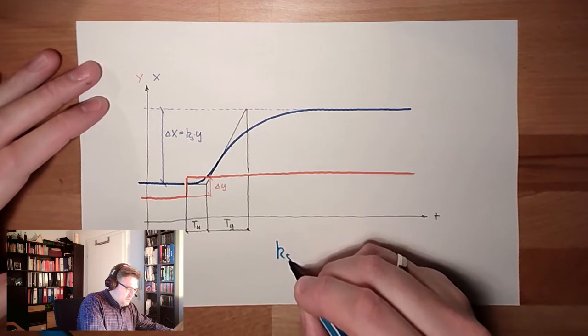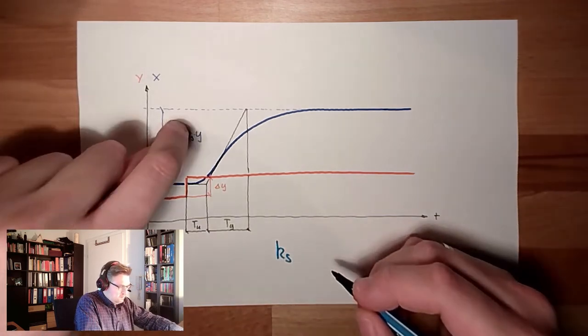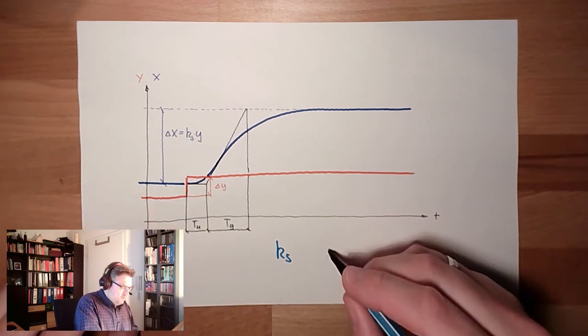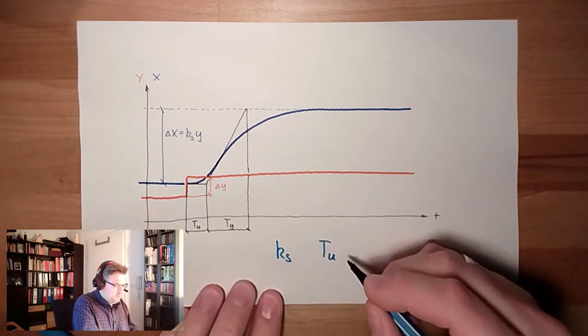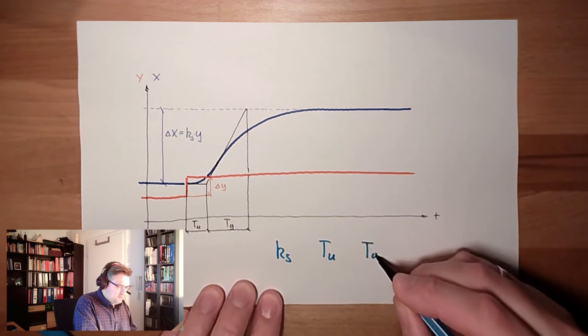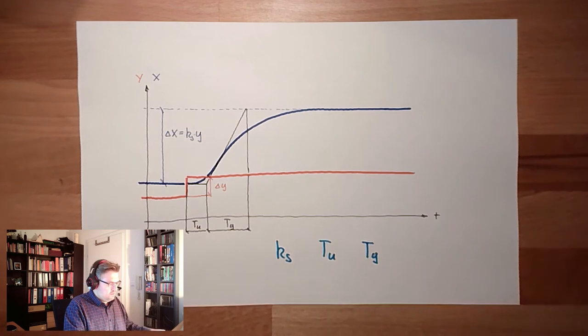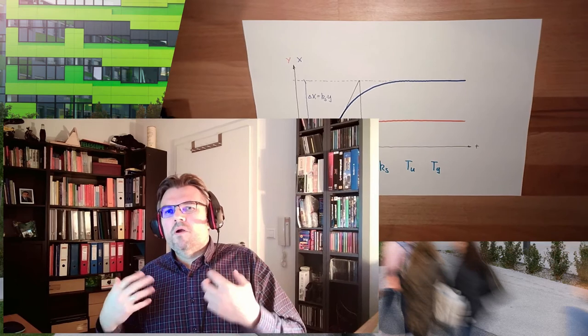We have Ks, the steady gain of our system. We have Tu, the delay time of our system, and we have the rise time of our system, Tg. With these three parameters, we can get the parameters of different types of controllers.